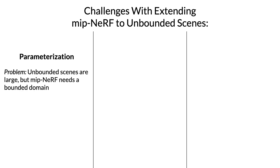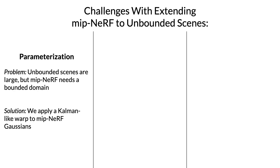The first problem is in terms of parameterization. Unbounded scenes are, by definition, unbounded, but MIPNERF needs its inputs to be in a bounded coordinate space. To deal with this, we warp the MIPNERF Gaussians into a non-Euclidean space using a technique that looks a lot like an extended Kalman filter.